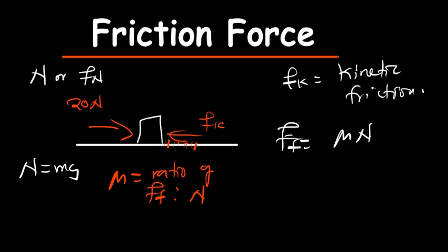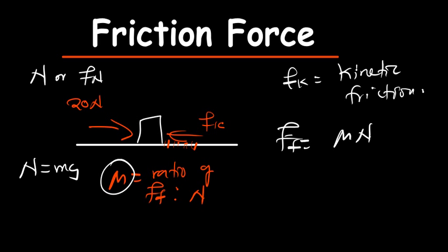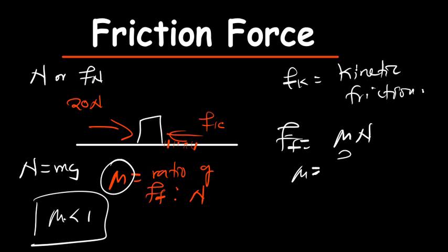Let's talk more about the mu value. Mu tells us how rough or how smooth the surface is. The mu value will always be less than 1. Why? Because whenever you are finding the mu value, you will discover that the friction force divided by the normal force — the normal force will always be greater than the friction force.